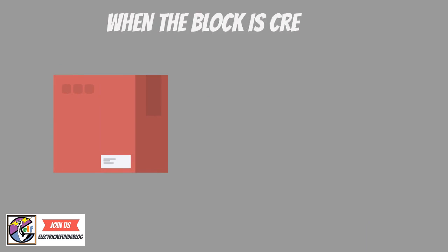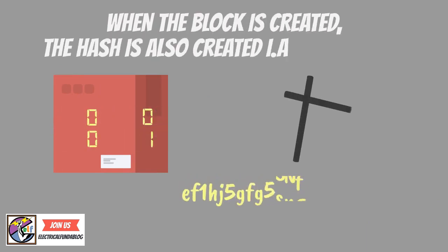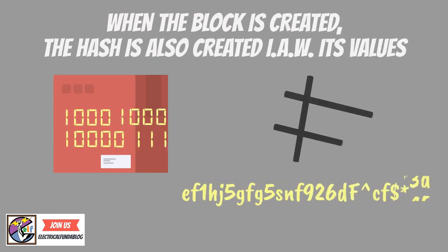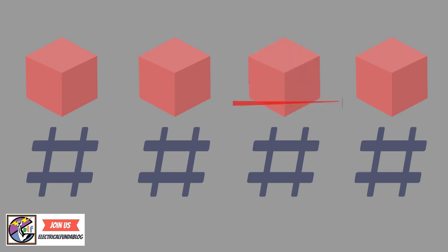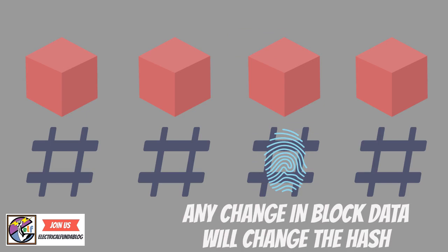Once a block is created, a hash is also calculated and created. If something changes inside the block, it will cause the hash to change. Hash is a unique ID — it is just like a fingerprint. If there is a change in the fingerprint, the fingerprint of a block cannot be the same as before, and it will not be the same block.